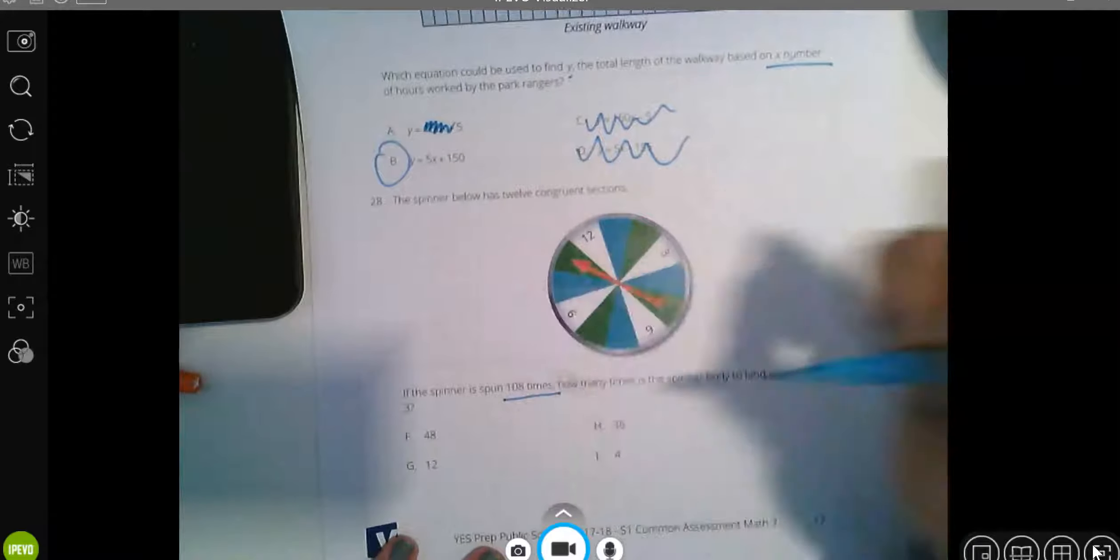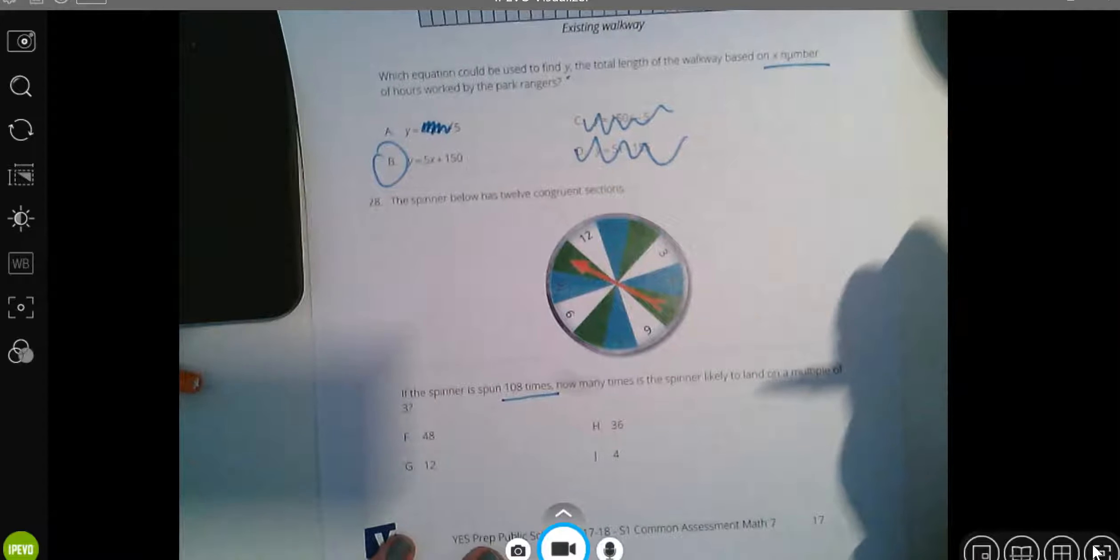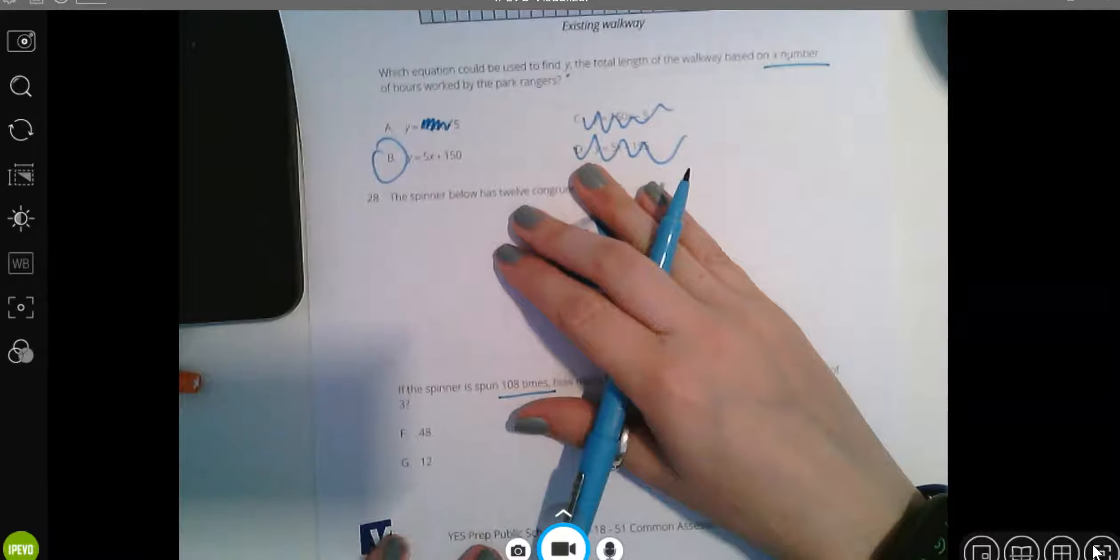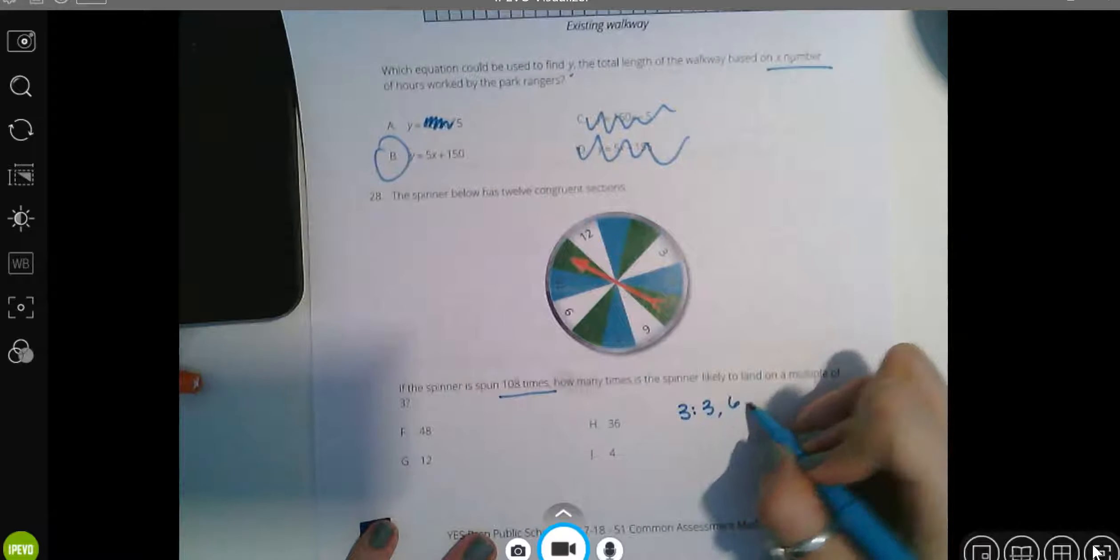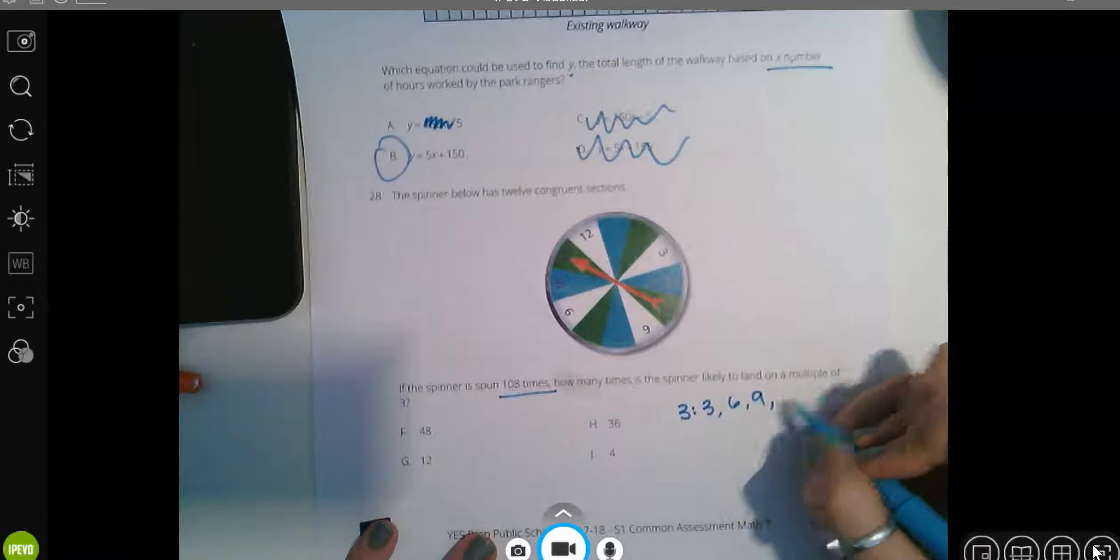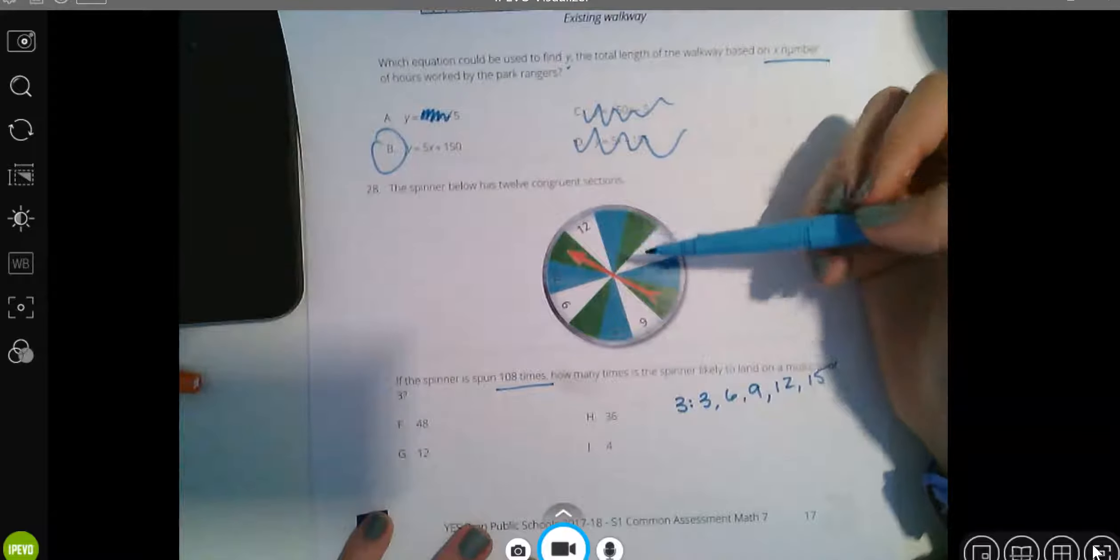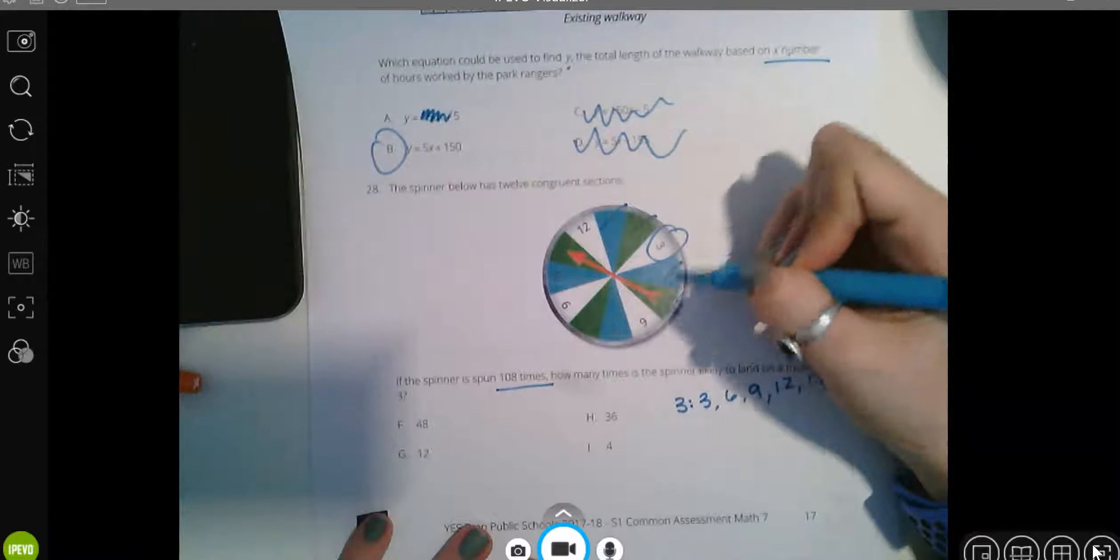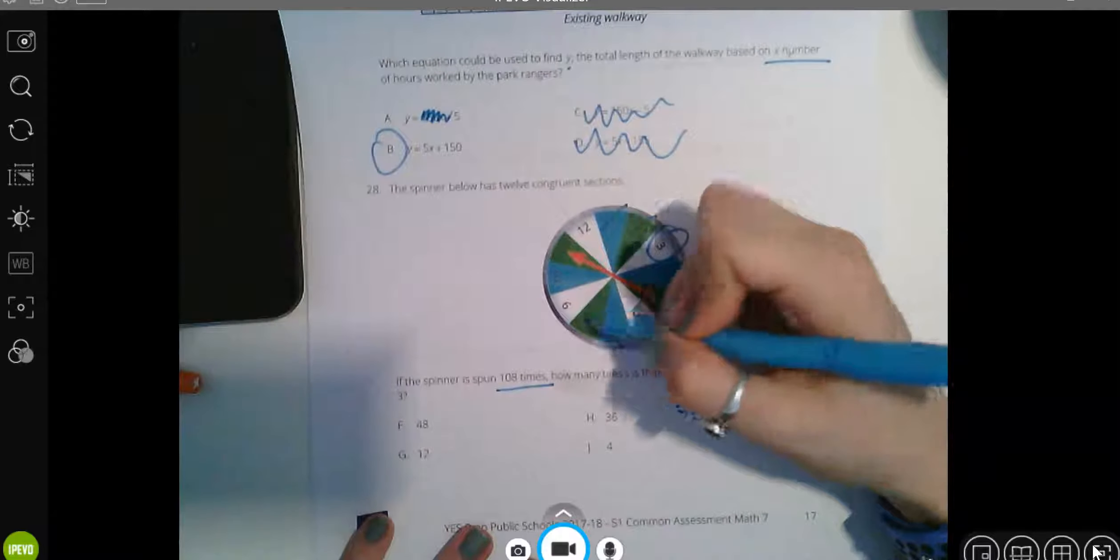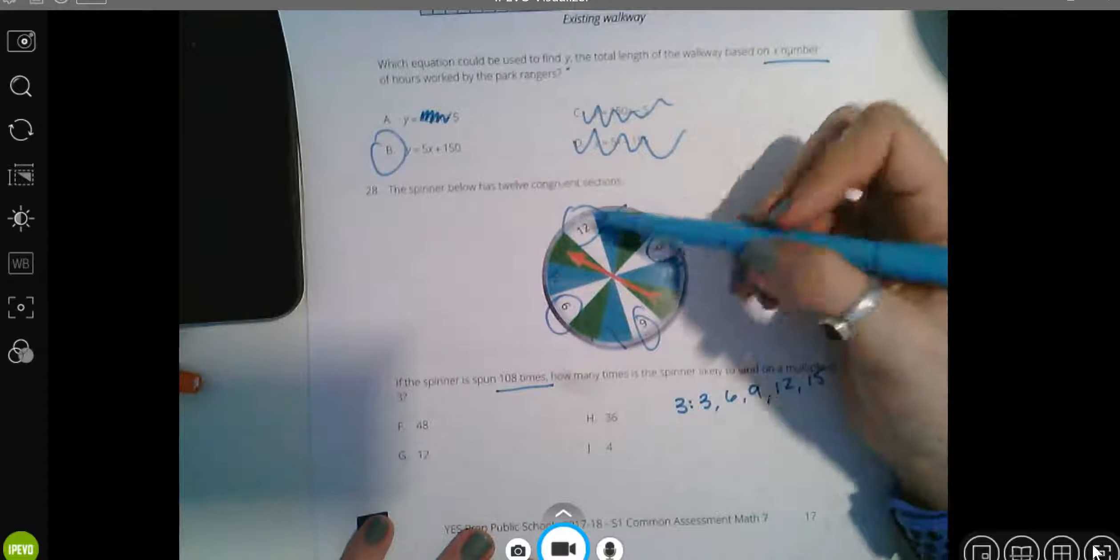The spinner below has 12 congruent sections. If the spinner is spun 108 times, how many times is the spinner likely to land on a multiple of three? Not even looking at my spinner. I know my multiples of three. Three times one is three. Three times two is six. Three times three is nine. Three times four is 12. Three times five is 15. I think I'm going to stop and check now. Not one. Not two. Yes, three. Not four. Not five. Yes, six. Nope. Nope. Yes. Nope. Nope. Yes. So, one, two, three, four options out of the 12.